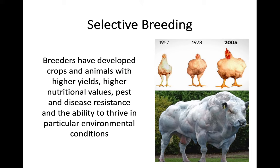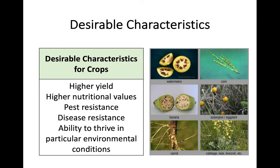As a recap, breeders have been able to develop crops and animals with high yields, higher nutritional values, natural pest and disease resistance, and the ability to thrive in certain environmental conditions — very hot areas, very cold temperatures, areas with very little or a huge amount of rainfall. For crops specifically, the desirable characteristics include higher yield, higher nutritional values, pest resistance, disease resistance, and the ability to thrive in particular environmental conditions. People have bred crops in a certain way to build up these characteristics.